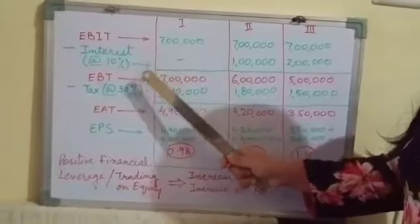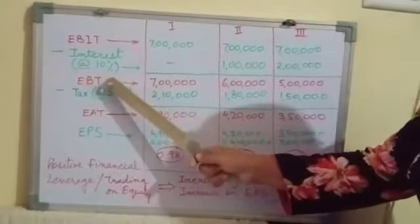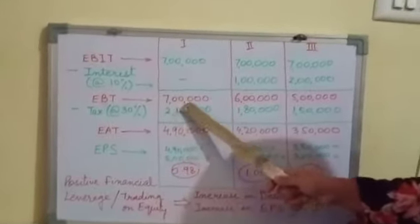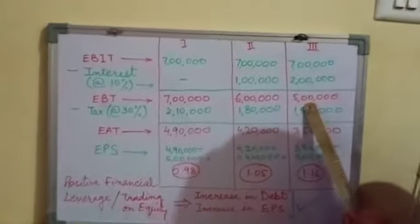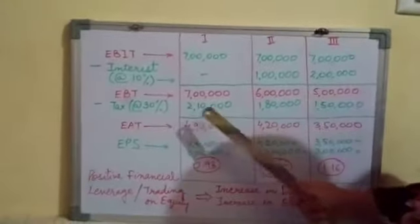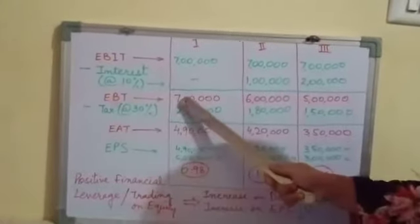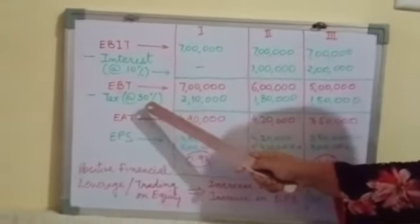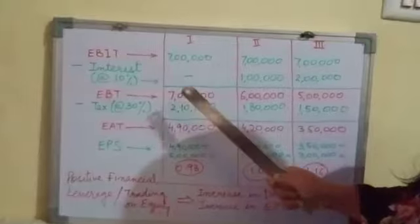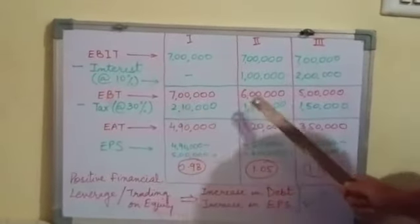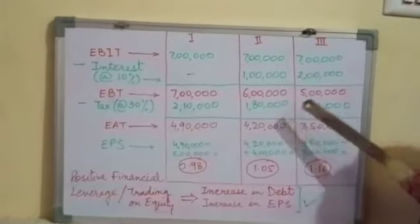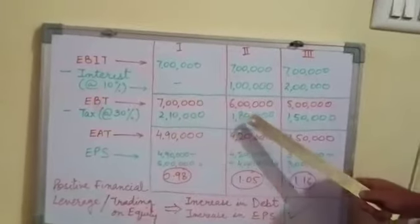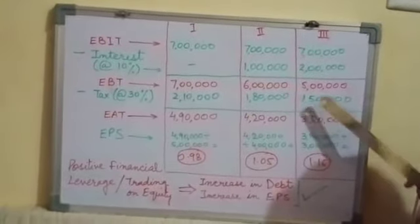After deducting interest, earnings before taxes are: 7 lakhs in situation 1, 6 lakhs in situation 2, and 5 lakhs in situation 3. From these amounts, we deduct tax at 30%. 30% of 7 lakhs is 2,10,000; 30% of 6 lakhs is 1,80,000; and 30% of 5 lakhs is 1,50,000. These are the tax amounts deducted in all three situations.